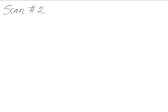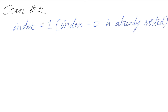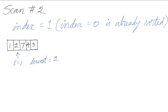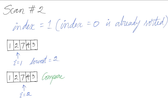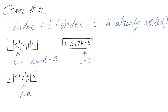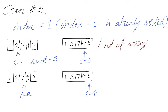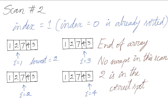Let's look at scan number 2. The index will begin from 1 because index 0 is already sorted. This is the array at the end of the first scan. We start with index 1. The lowest we have seen so far is 2. We compare 7 with 2 — 2 is still the lowest. We increment the index; 2 is still the lowest. 3 is not less than 2, so 2 is still the lowest. We have reached the end of the array. There were no swaps in this scan — 2 is in the correct spot.